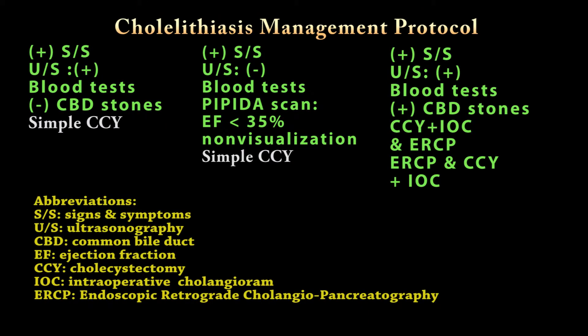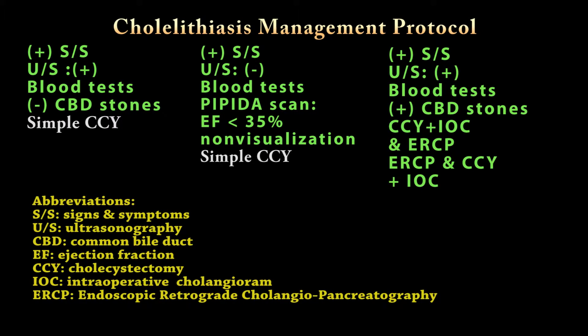To understand the management protocol, we will present three scenarios. In the first scenario, if the patient has signs and symptoms and the ultrasound shows gallbladder stones with no evidence of common bile duct stones, the treatment is simple cholecystectomy. In the second scenario, if the patient has symptoms, the ultrasound does not show stones, and blood tests suggest acute inflammation of the gallbladder, the next step is to perform a HIDA scan. If the ejection fraction is less than 35% or there is non-visualization of the gallbladder, the treatment is again simple cholecystectomy.